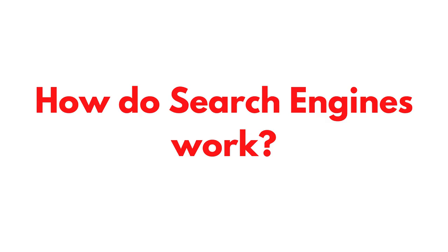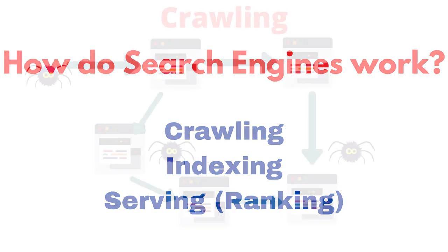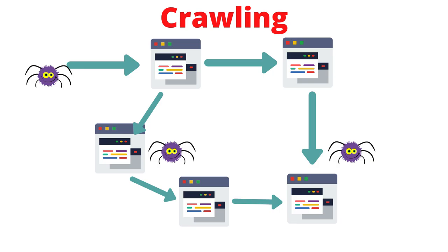Now let's start with the most technical part: on-page SEO. To understand it, we need to answer: how do search engines work? The goal of a search engine is to show you the best information for your query, and the process is crawling, indexing, and serving. Every search engine has robots — also called crawlers or spiders — whose mission is to crawl the internet looking for new or updated content.